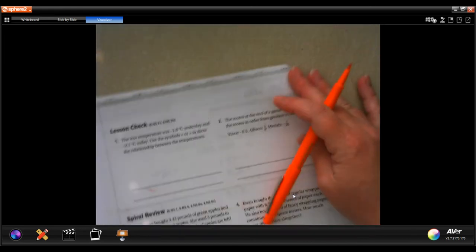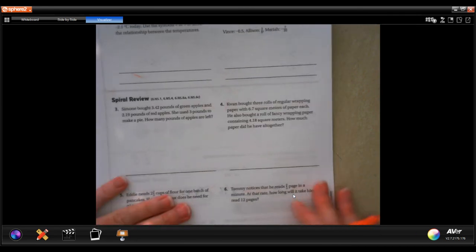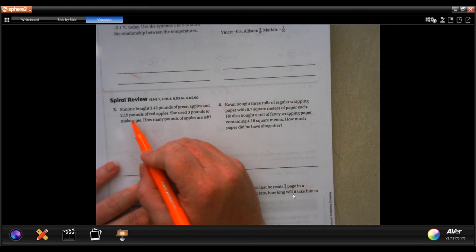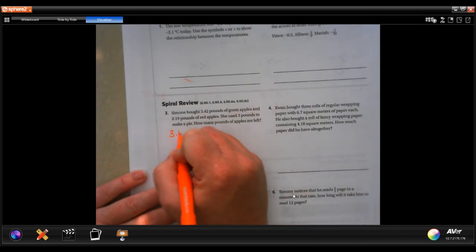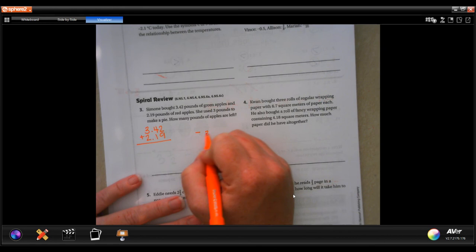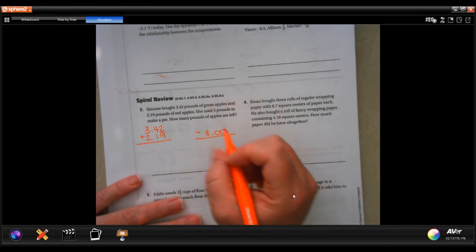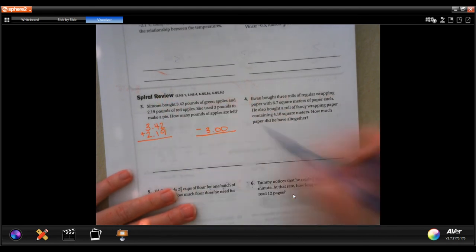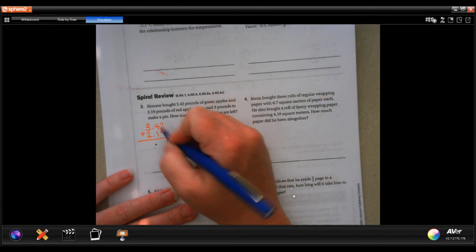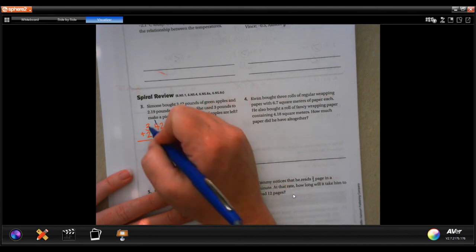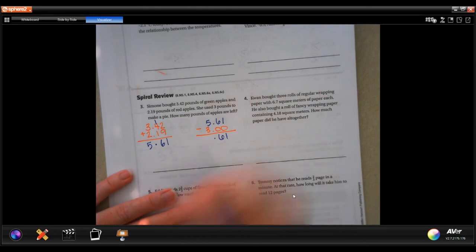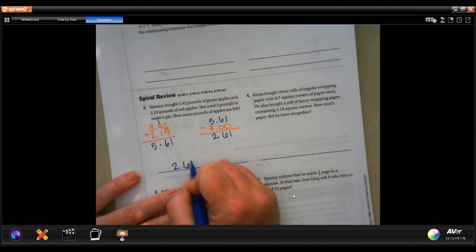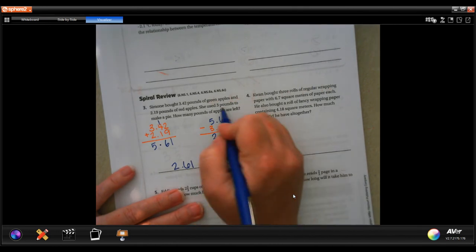We're going to go on to the back. You guys are going to do the lesson check. You totally can, I believe in you. We're going to go down and do the follow-up review. So Simone bought 3.42 pounds of green apples and 2.19 pounds of red apples. She has three pounds to make a pie. How many pounds of apples are left? So first thing, we had total. We need to add those up. Then we need to subtract 3 from whatever that number is. So adding them up, dropping my decimal first. 2 plus 9 is 11, carry that 1. 1 plus 4 is 5, plus 1 more is 6. 3 plus 2 is 5. 5.61 minus that 3. We're still going to have our 0.61. 5 minus 3 is 2. 2.61 pounds, being measured in pounds.